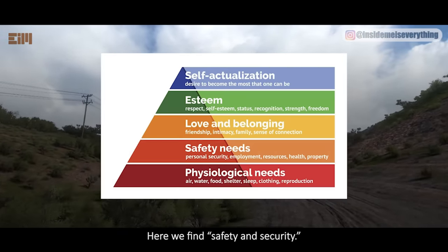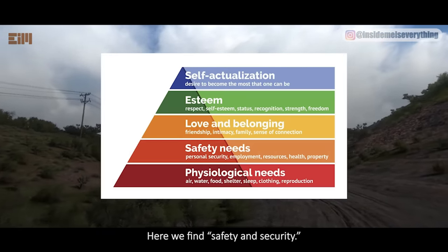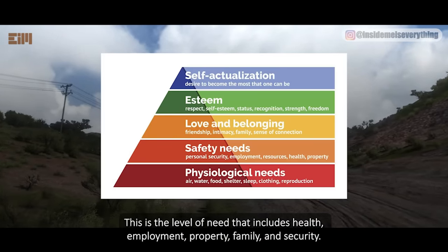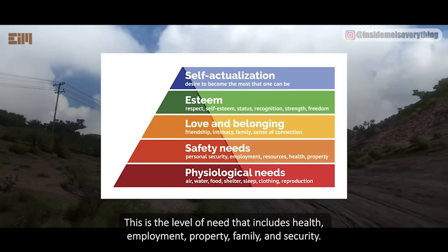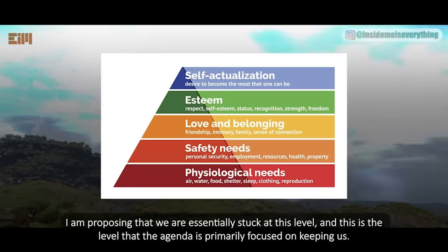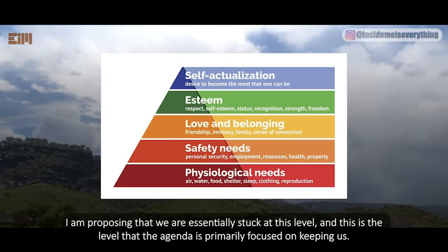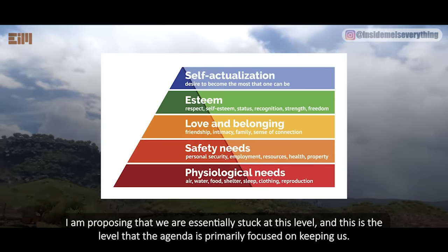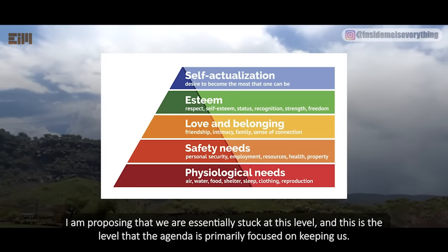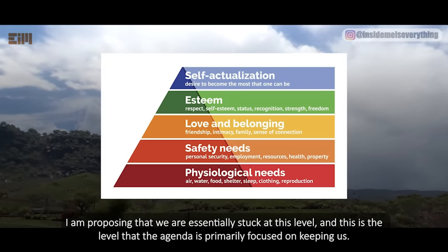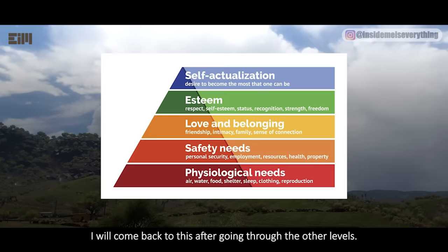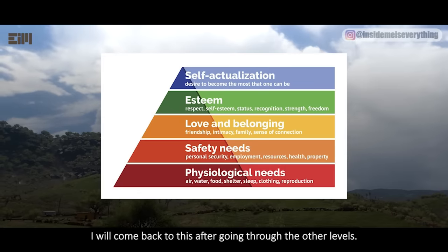The second level is safety and security. This includes health, employment, property, family, and security. I am proposing that we are essentially stuck at this level, and this is the level that the agenda is primarily focused on keeping us. I will come back to this after going through the other levels.